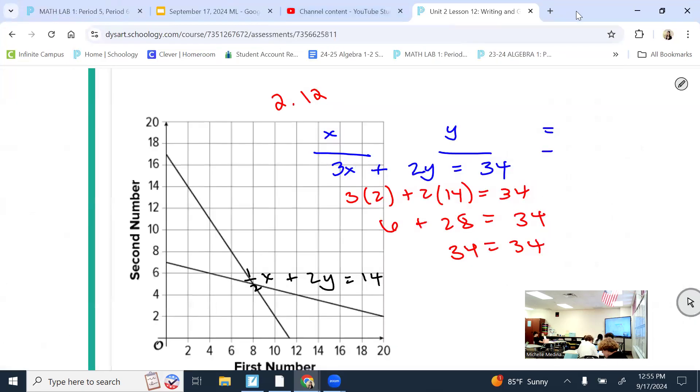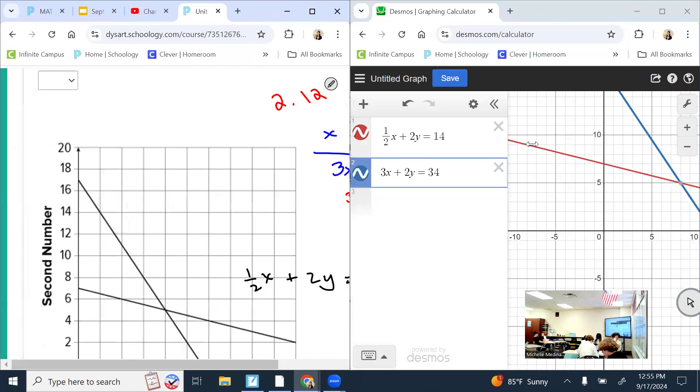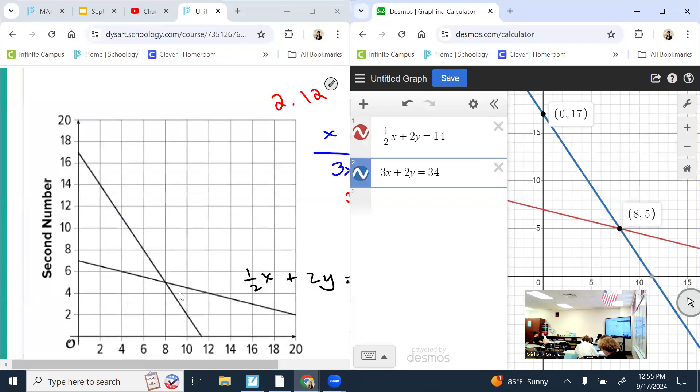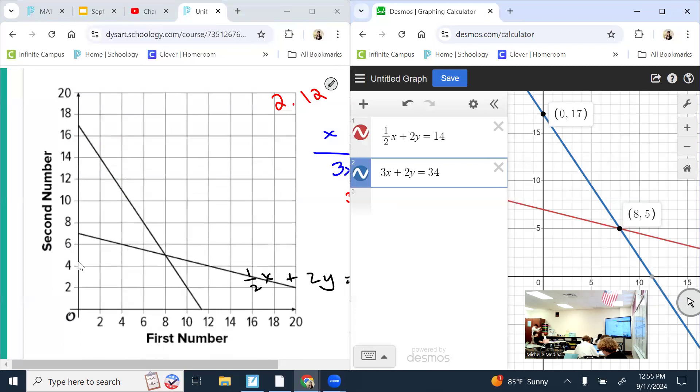3X plus 2Y. So let's see if it matches up. It looks pretty good to me. The Y intercept is at 17. Does this look like it's at 17? Yep. It intersects at 8, 5. Let's see if that matches up. And it does.